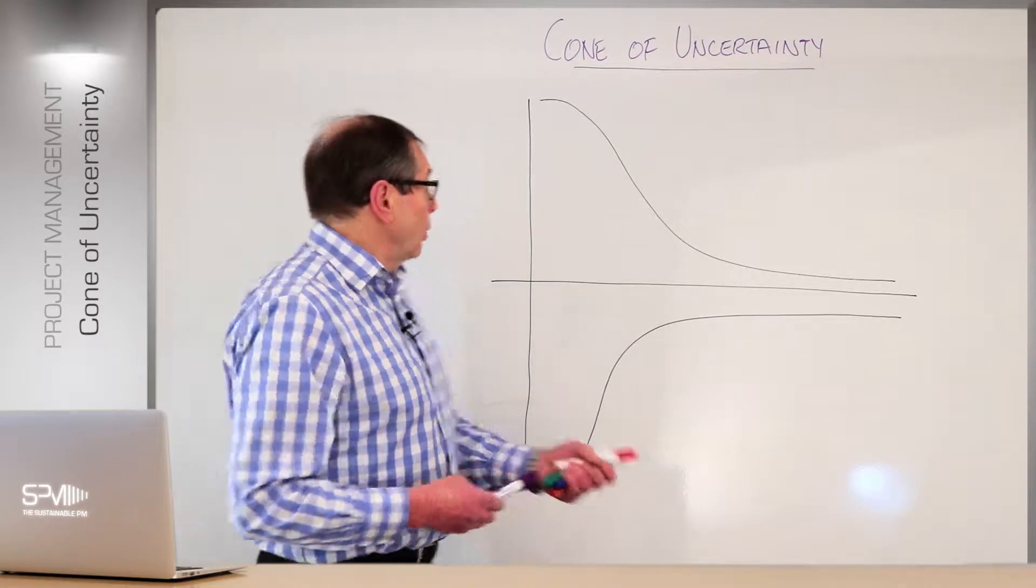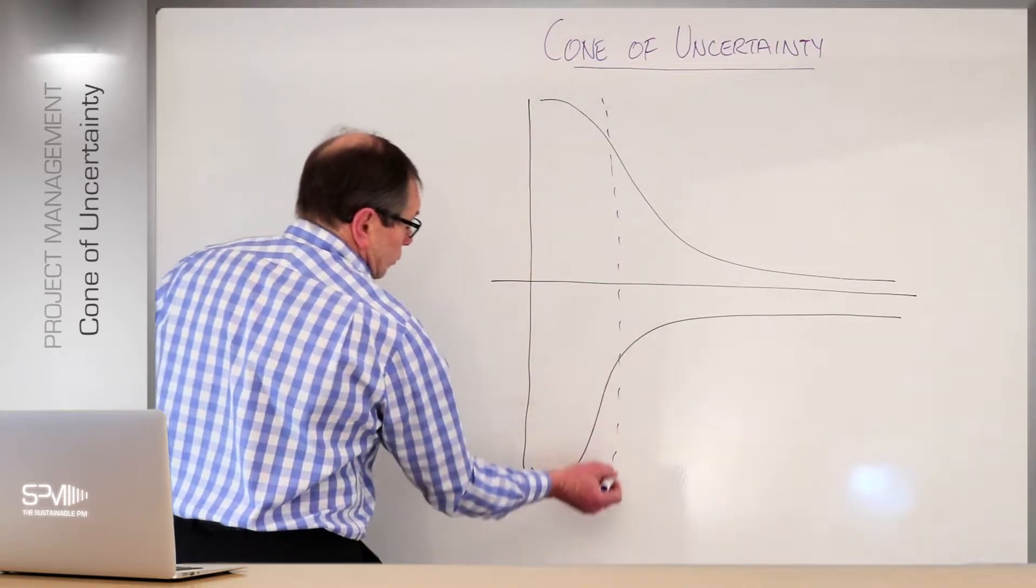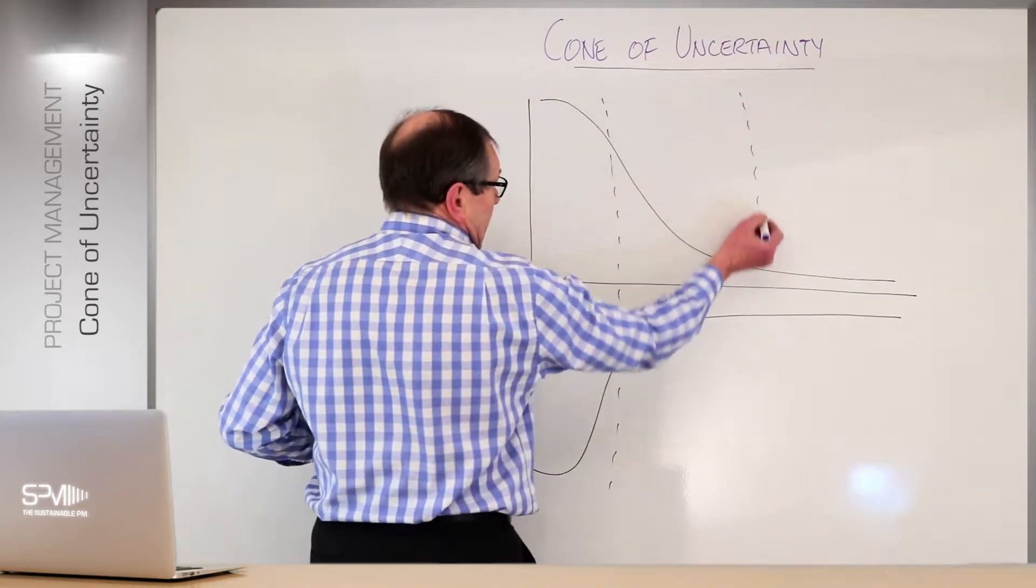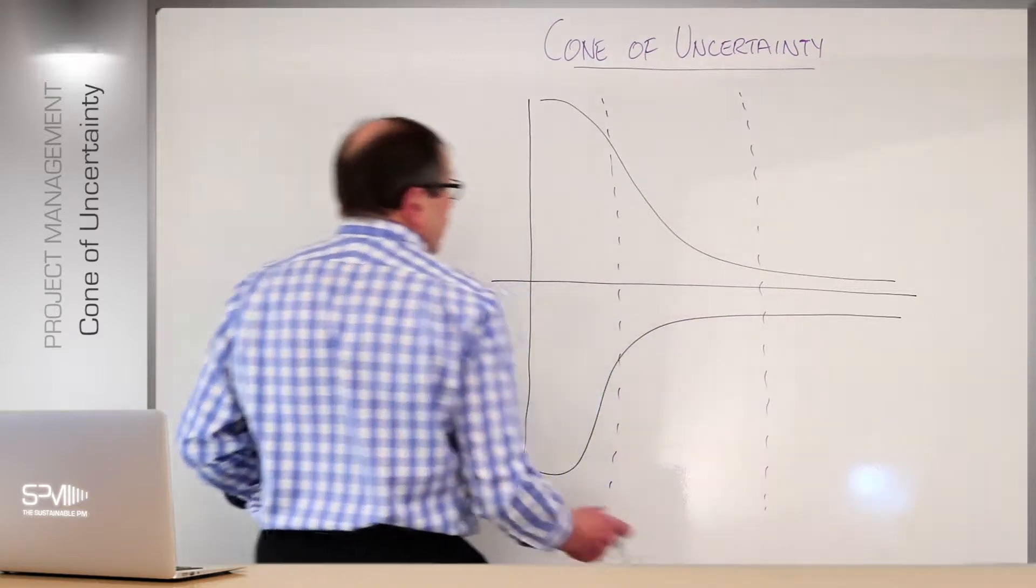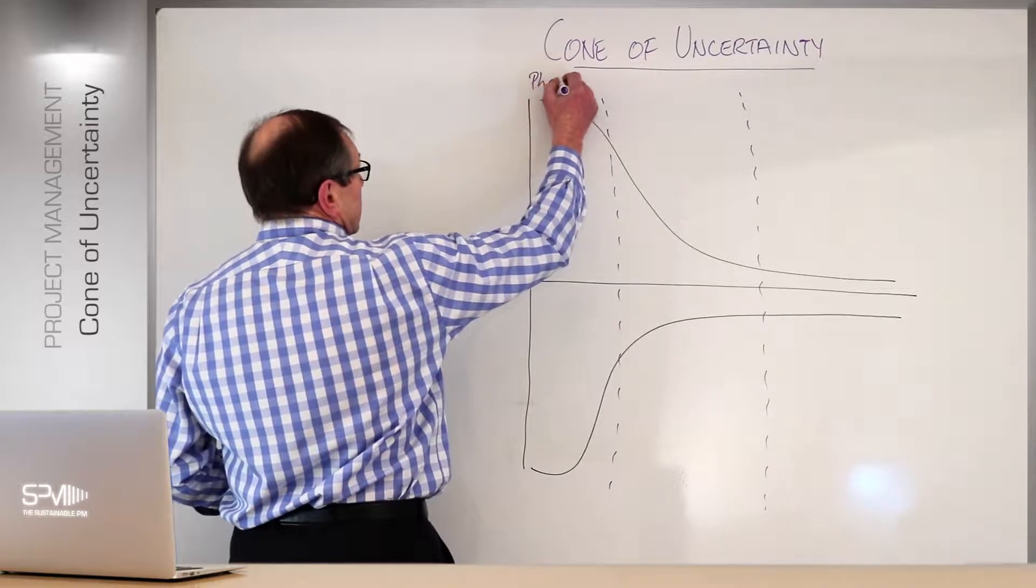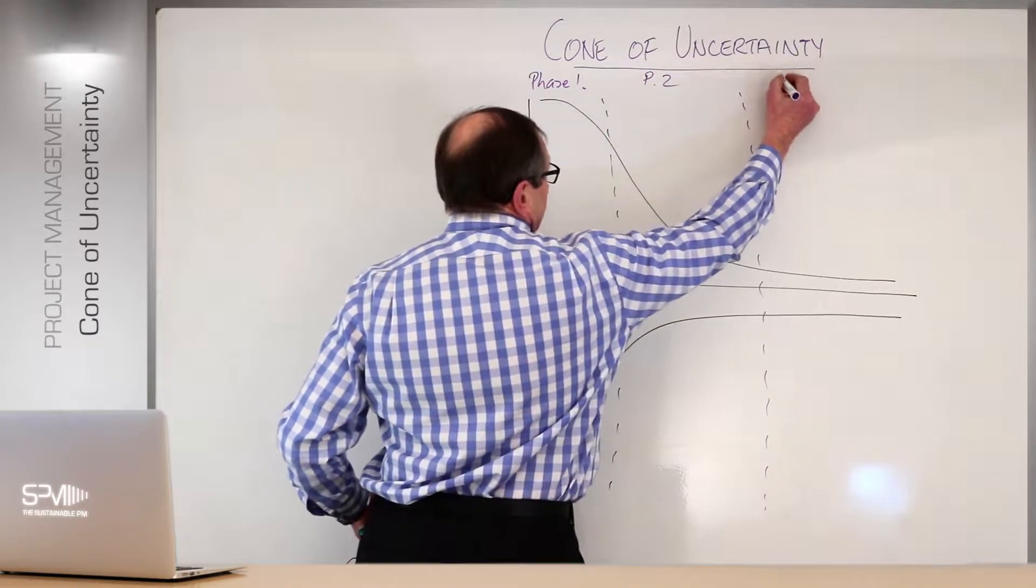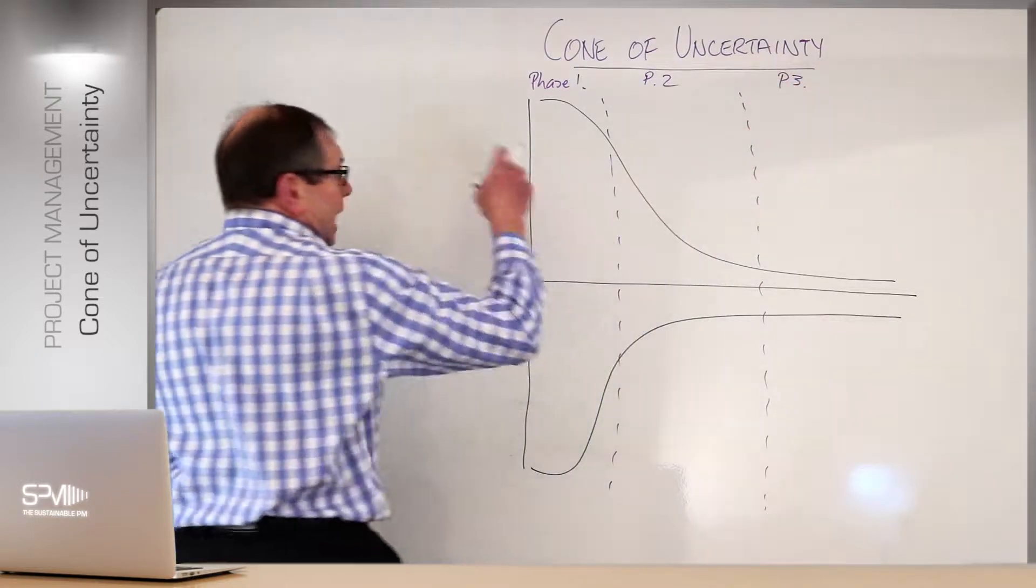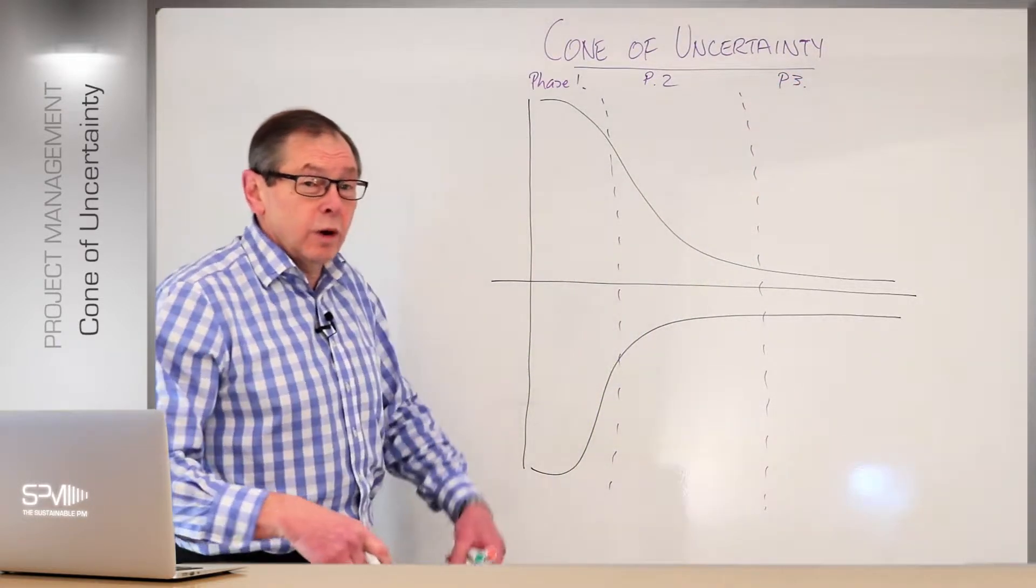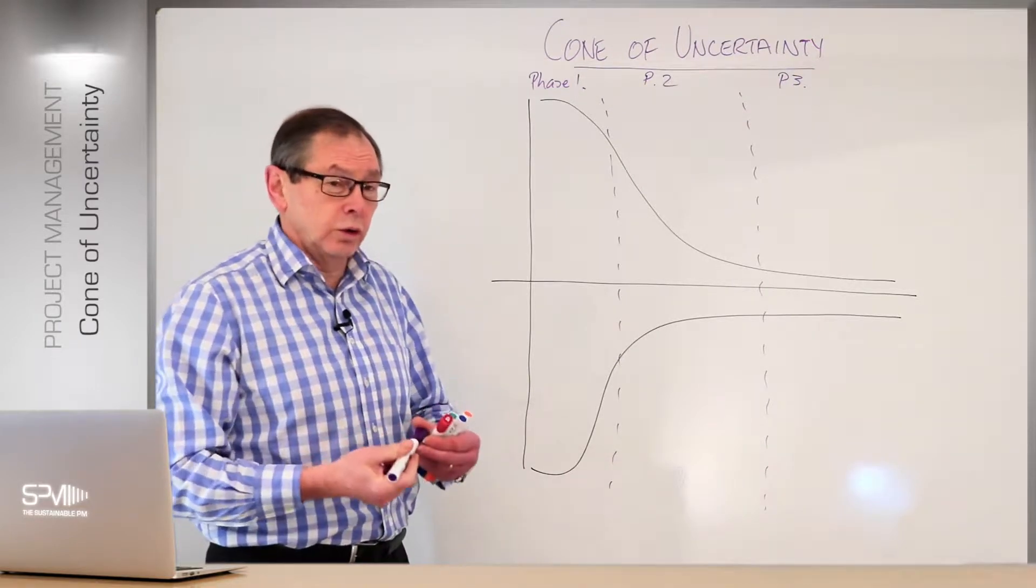What we're going to do is divide this cone up into three main areas. I'm going to call them phases: phase one, phase two, and phase three.